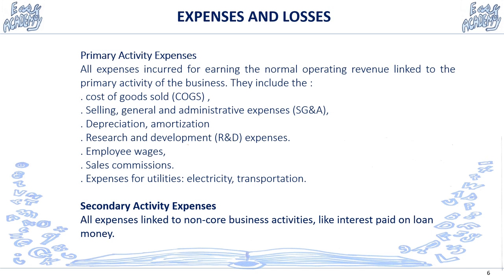Now let's look at expenses and losses. There are two types: primary activity expenses and secondary activity expenses. All must be deducted from the sales revenues to obtain the net result. Primary activity expenses include cost of goods sold, selling, general and administrative expenses, depreciation and amortization, R&D, employee wages — usually the most important expense — sales commission, and utilities. Secondary activity expenses are expenses linked to non-core business activities, like interest paid on loans.